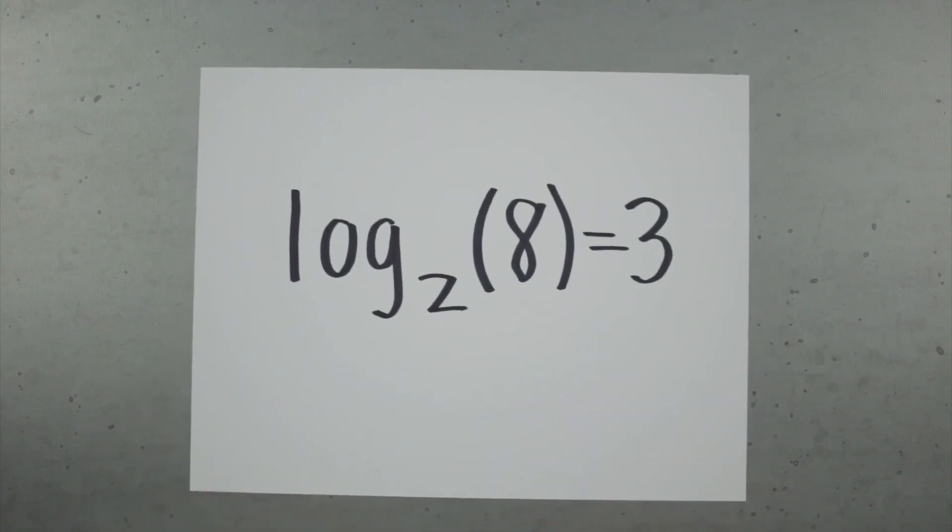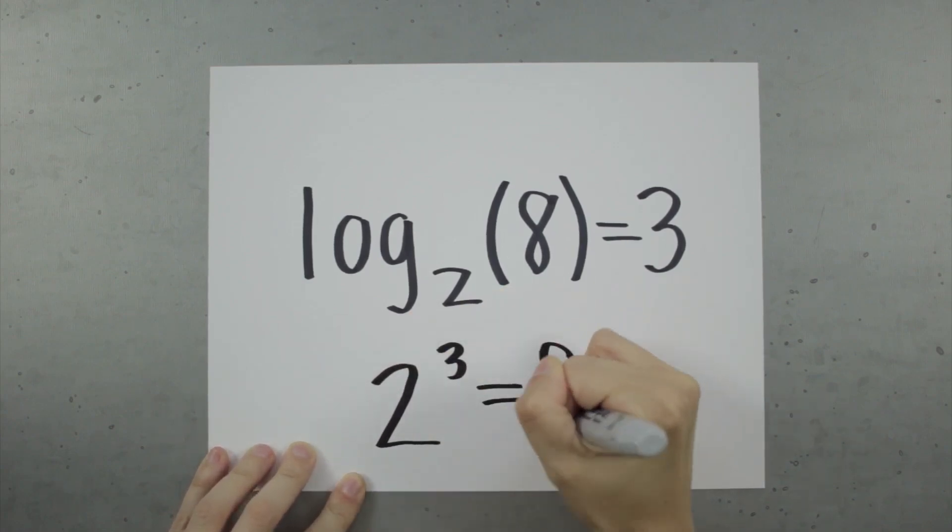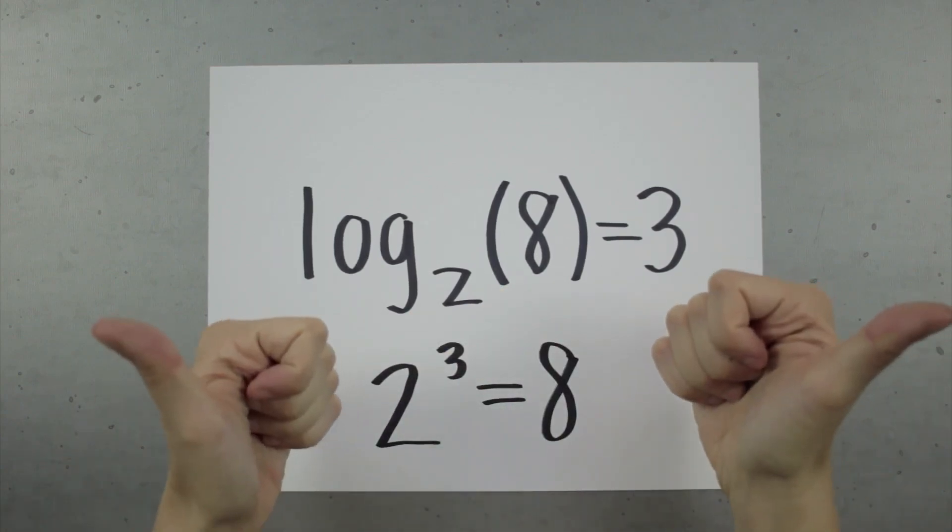In other words, if we go back to our original logarithm, if we raise 2 to the power of 3, we're going to get 8. Or 2 to the third equals 8. That's what the logarithm tells us.